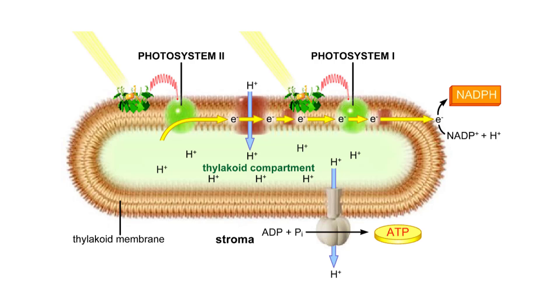The ATP and NADPH formed by this non-cyclic pathway are later put to use in the sugar-synthesizing light-independent reactions in the stroma.